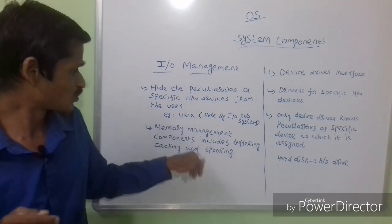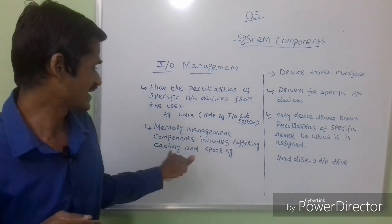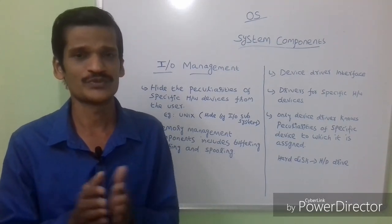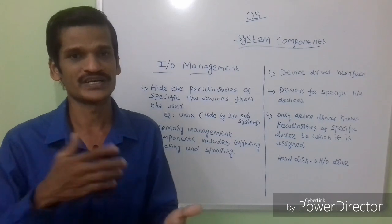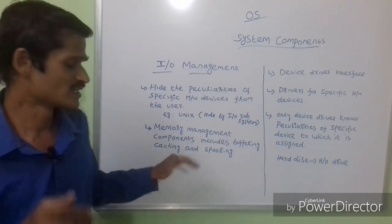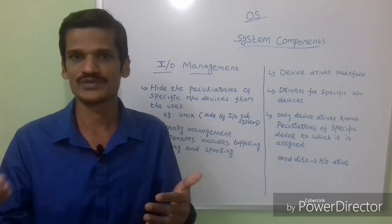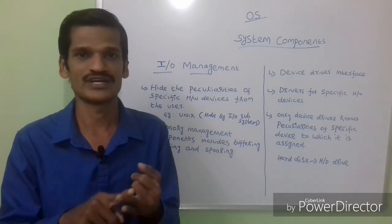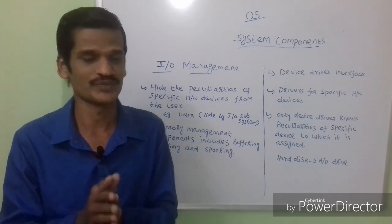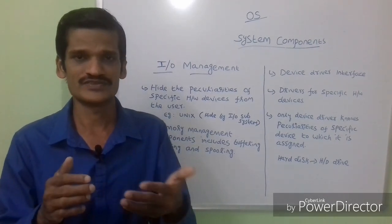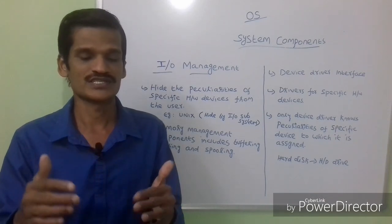One more example: if you take memory management, it has some components — for example, buffering, caching, and spooling. A buffer is a temporary storage area; using a buffer system, we can easily store and retrieve data. Caching is also very important — we have L1 cache and L2 cache. In our future class, we are going to see all the details about cache memory and virtual memory in a very detailed manner. Spooling also — what is spooling — all those things we will see in our future class.